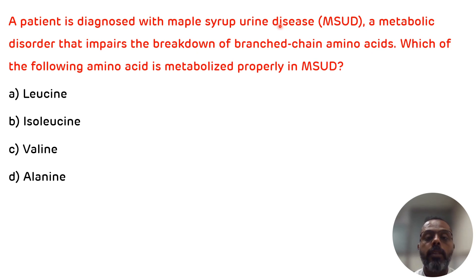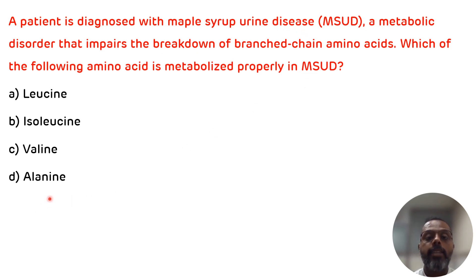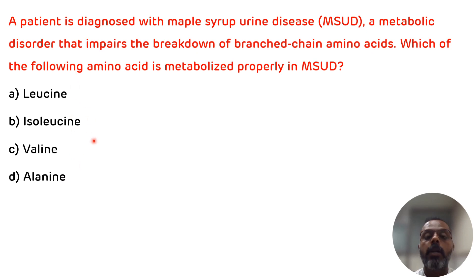From this clarification, it is now clear which amino acid is metabolized properly in Maple Syrup Urine Disease. The correct answer is alanine, as alanine is a simple amino acid — it is not a branched-chain amino acid — while the other three options are branched-chain amino acids. That is the correct answer.